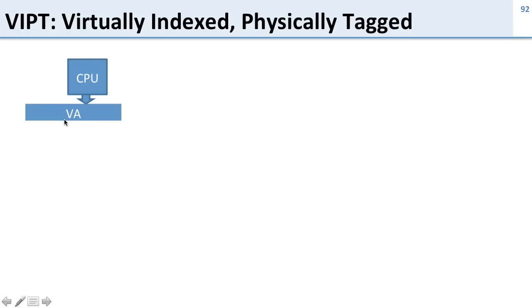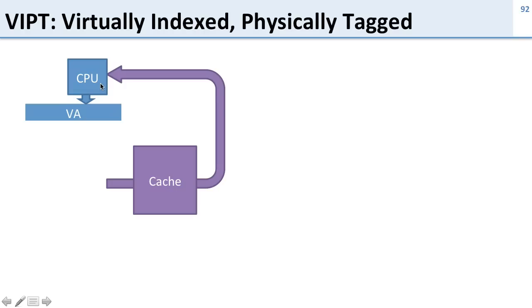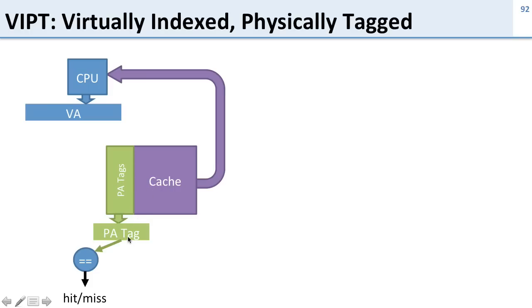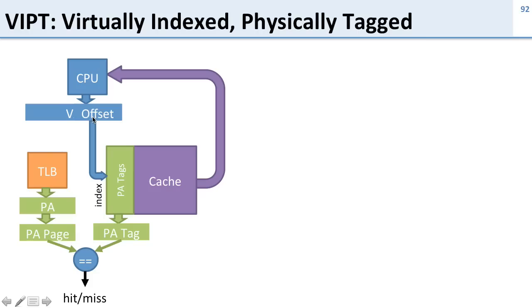Here's the detail: the CPU outputs a virtual address. The cache has physical address tags. To know if the data is correct, I get out a physical address tag and compare it to the physical address I'm looking up — which requires the TLB. To do both at the same time, we take the page offset bits and use them to index into the cache, while we use the virtual page number to look up the TLB in parallel. Part of the bits index the cache right away, part index the TLB right away, and then we compare at the end based on the physical address.